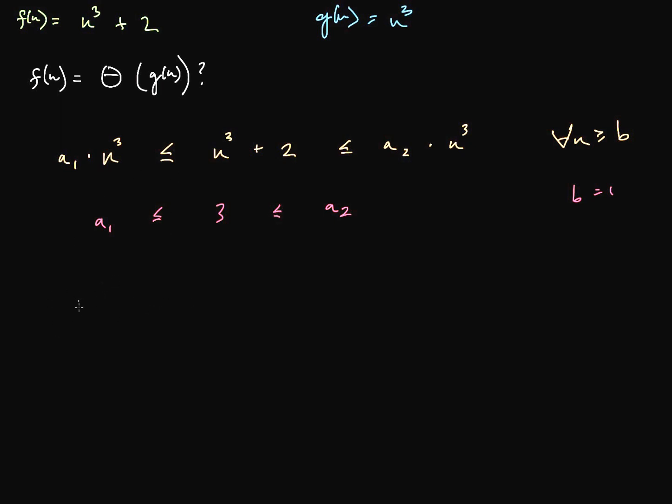And therefore, N cubed plus two is Big O N cubed. And N cubed plus two is Big Omega N cubed on this end. Therefore, N cubed plus two is Big Theta N cubed.